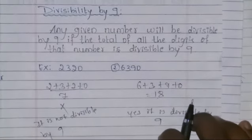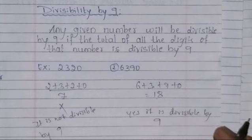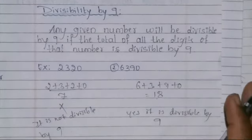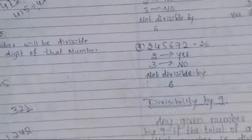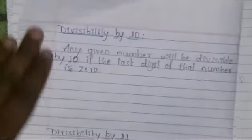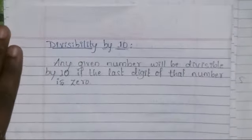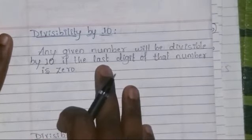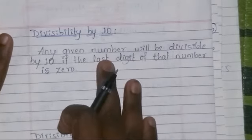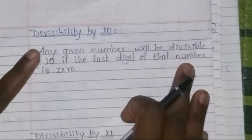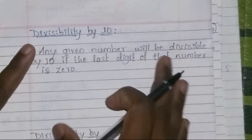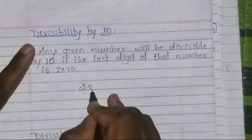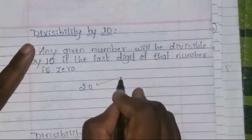I hope you have understood — it is a very simple test. Now we will go for divisibility of ten. Any given number will be divisible by ten if the last digit of that number is zero. Very simple. For example: twenty — last digit is zero, divisible by ten. One hundred — last digit is zero, divisible by ten. One hundred fifty — last digit is zero, yes, divisible by ten.